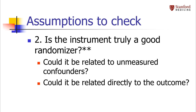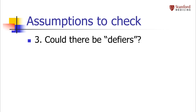Whether an analysis is convincing really depends on how much you believe the instrument is truly a good randomizer and truly meets these assumptions. In a good IV analysis, researchers should include a sensitivity analysis that examines the potential impact of plausible amounts of unmeasured confounding on the results — if there is some unmeasured confounding, how much might it have impacted the results? And don't forget, we've also implicitly assumed that there are no defiers. This is usually a good assumption, but it's something you'd want to think about, as there may occasionally be instruments where it could be violated.